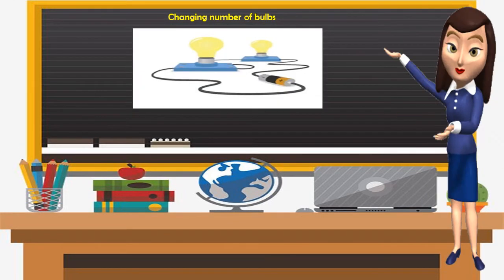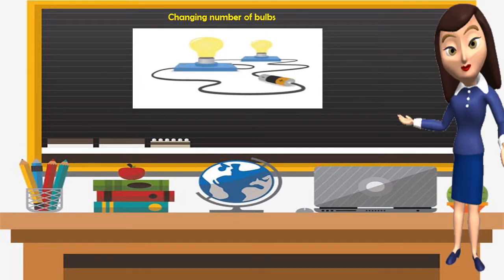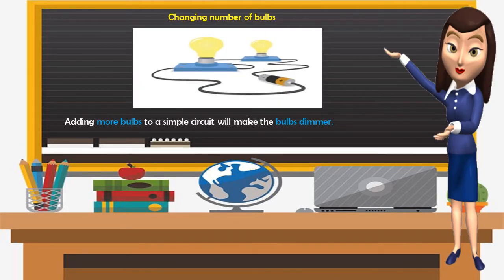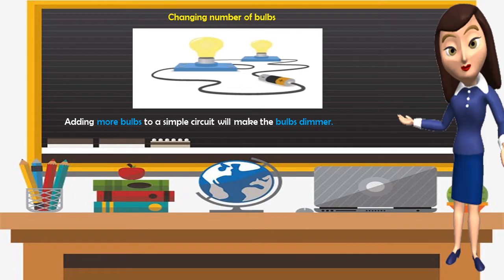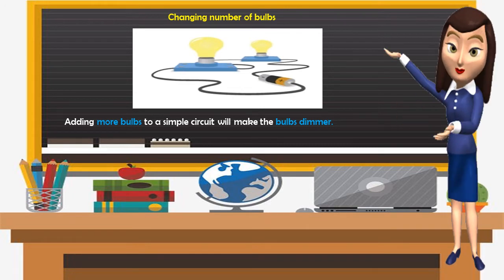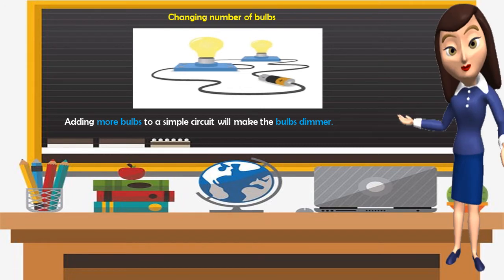Changing the number of bulbs: adding more bulbs to a simple circuit will make the bulbs dimmer.